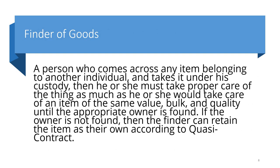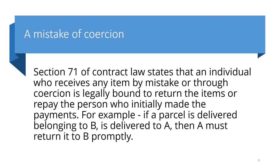The fourth type is finder of goods. A person who comes across any item belonging to another individual and takes it under their custody must take proper care of that item — as much as they would take care of an item of the same value, bulk, and quality — until the appropriate owner is found. If the owner is not found, the finder can retain the item as their own according to quasi-contract. So if you find something on the street, it becomes your responsibility to care for it until the real owner is found.